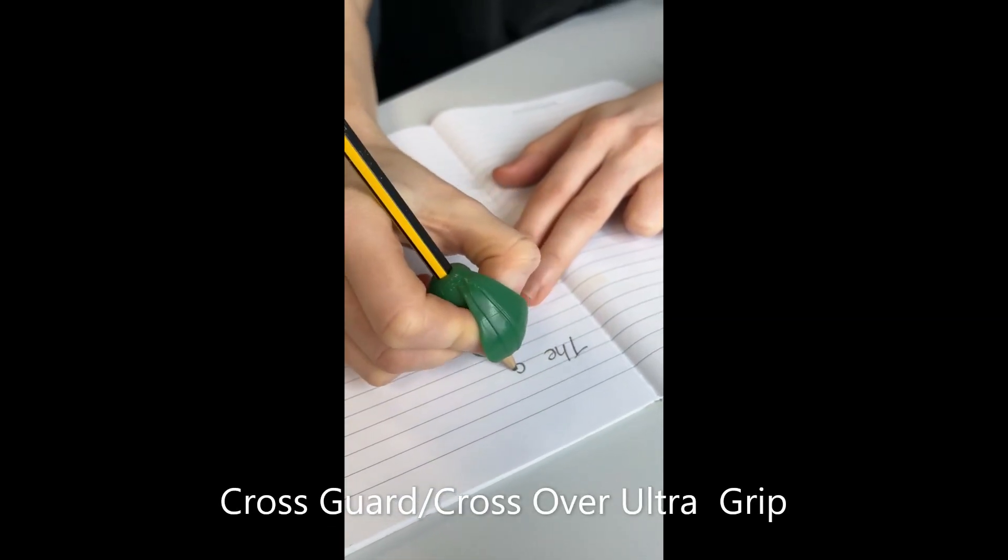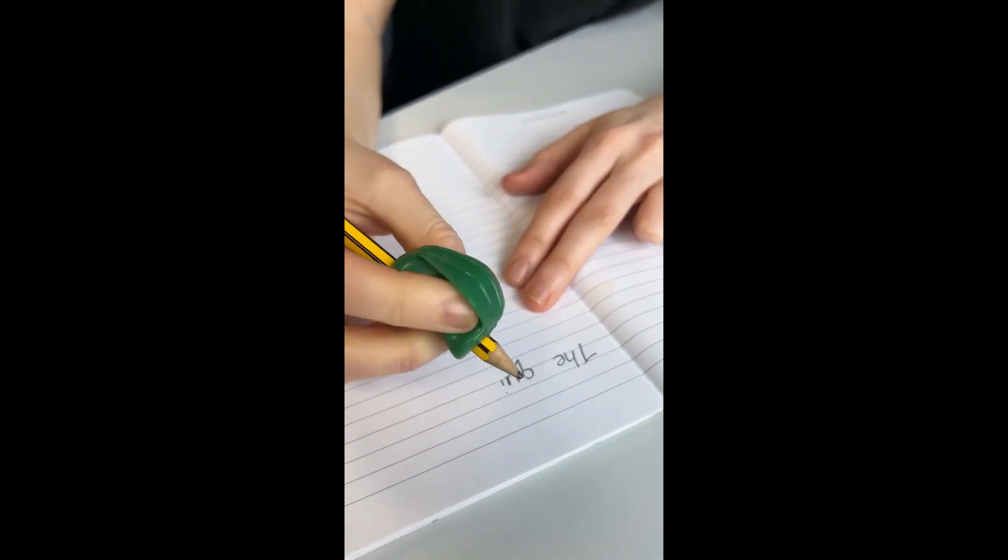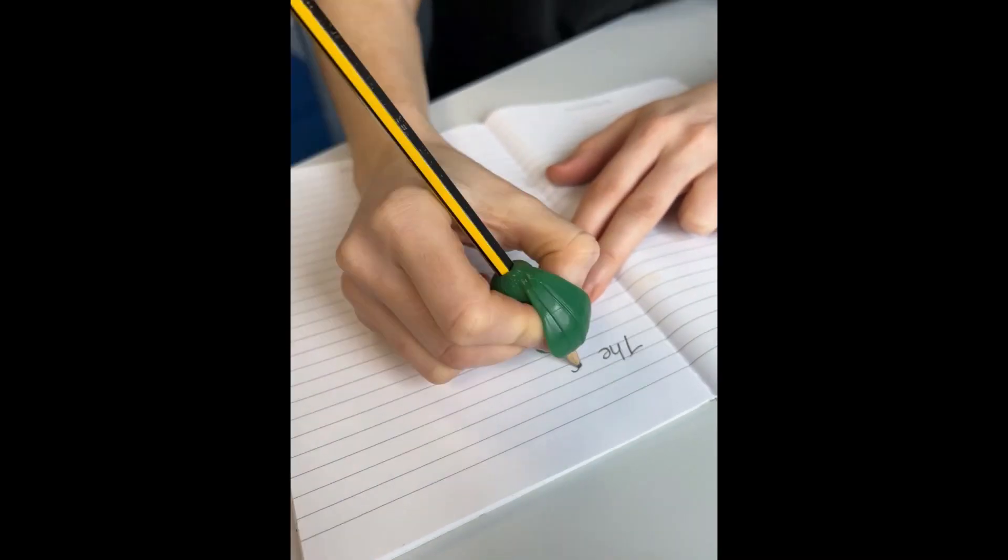The CrossGuard UltraGrip has an extra piece to keep the finger and thumb secure. It's a great option for some children who usually cross their thumb over their index finger as it stops this movement.